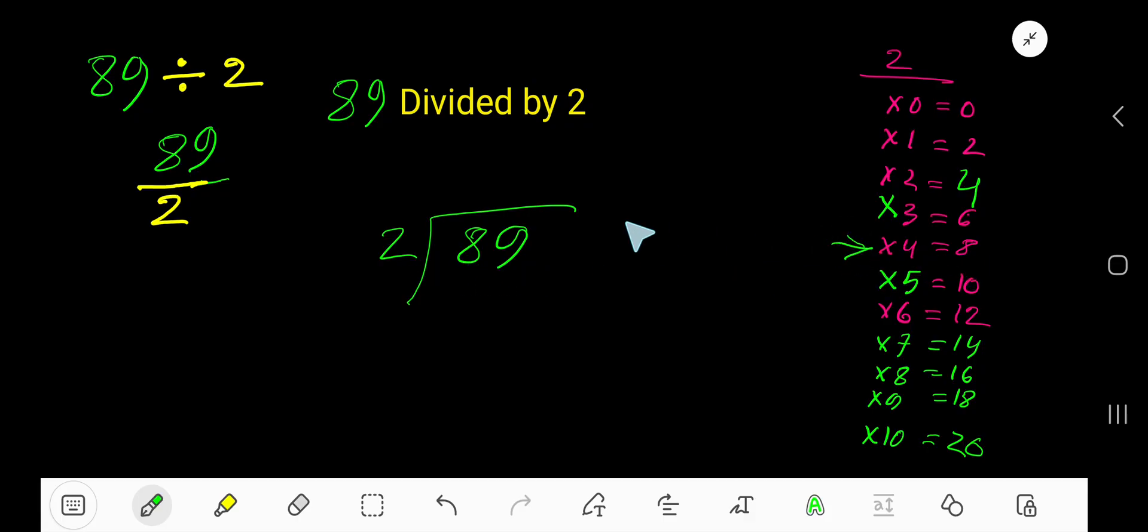Look, 2 goes into 8 four times. Write 4. 4 times 2 is 8, subtract 0, bring down this 9. 2 goes into 9 how many times? Look, 5 times would be greater, so we have to stop here.